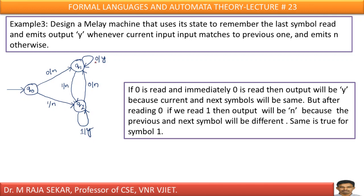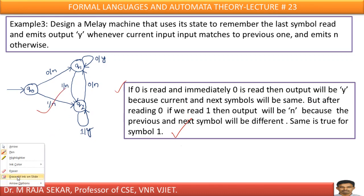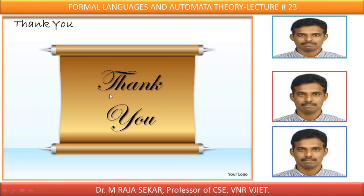For example, here we have zero on Q1. If I feed zero when the previous was one, zero and one are not matching, so I must print N. In similar manner, if I feed zero when the previous was one, it is not matching, so I must print N. Just go through and read this particular diagram — you can understand it. Thank you very much.